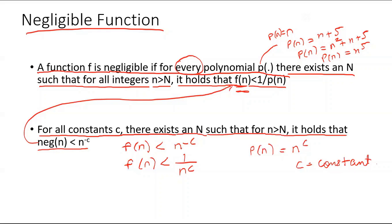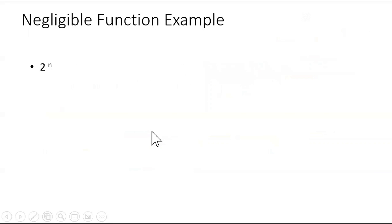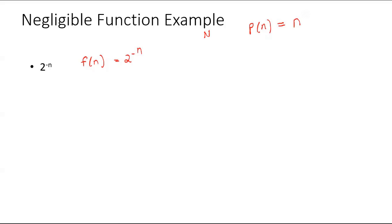Now let's take some examples to understand the concept more in depth. We have the function 2 to the power minus n, and we have to show that this is a negligible function — and for what value of capital N this function is negligible. So f(n) = 2^(-n). Let's choose any polynomial; I'm picking n to the power minus 6, so my c is 6.